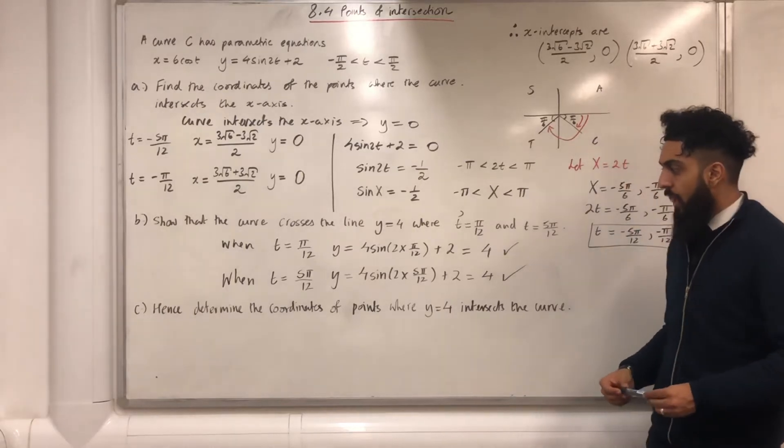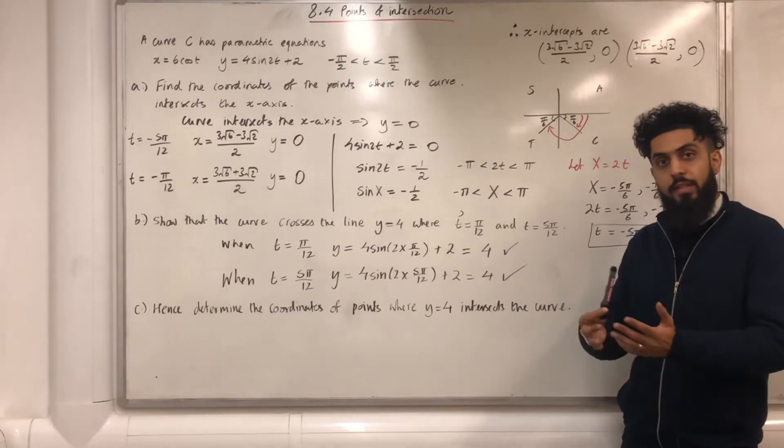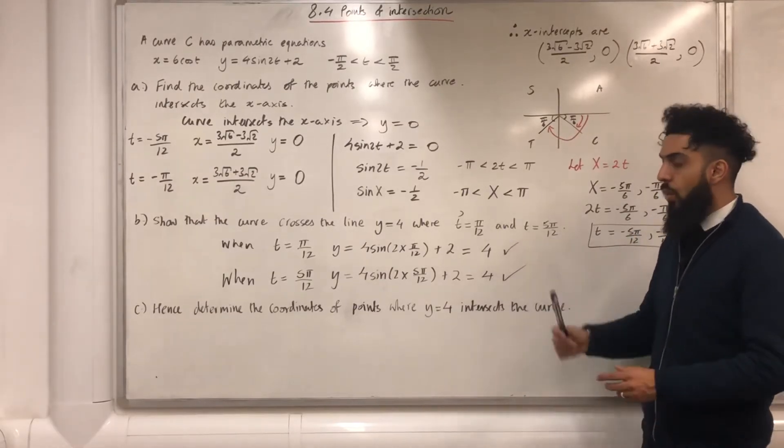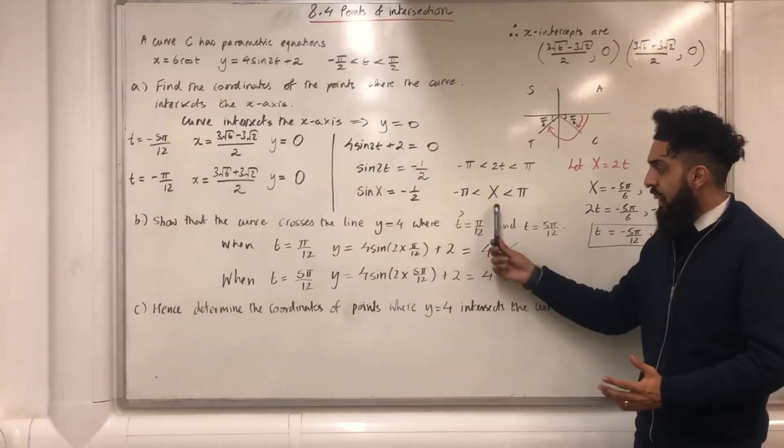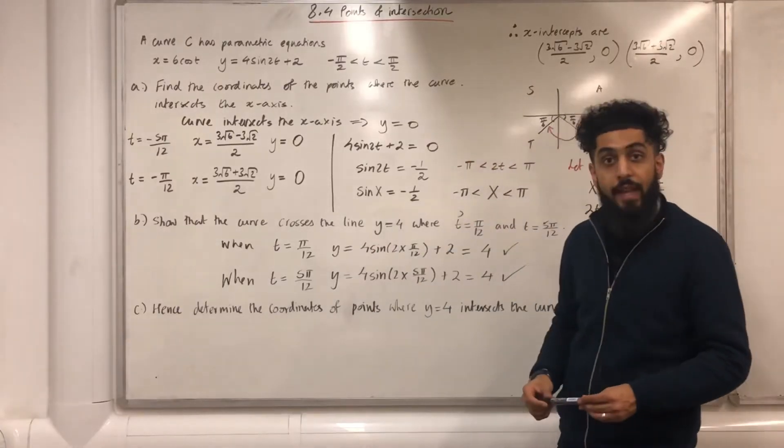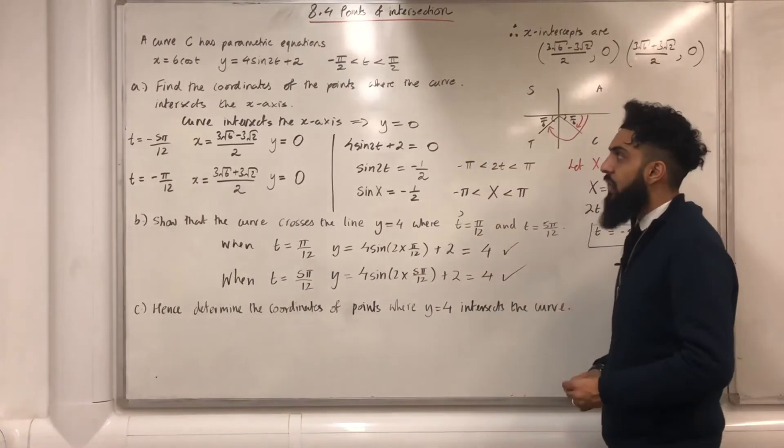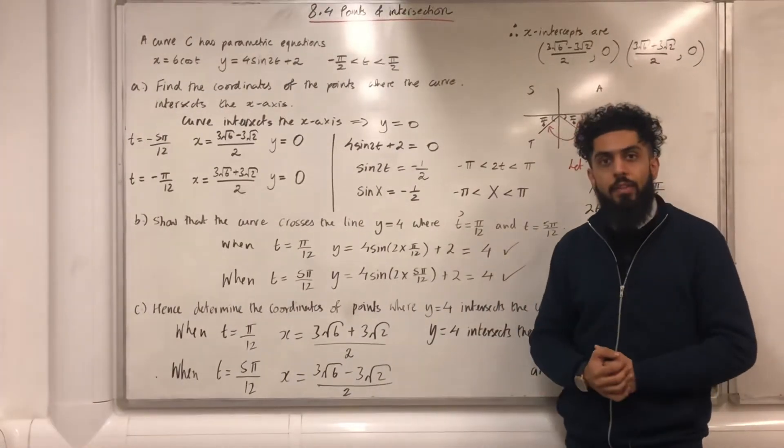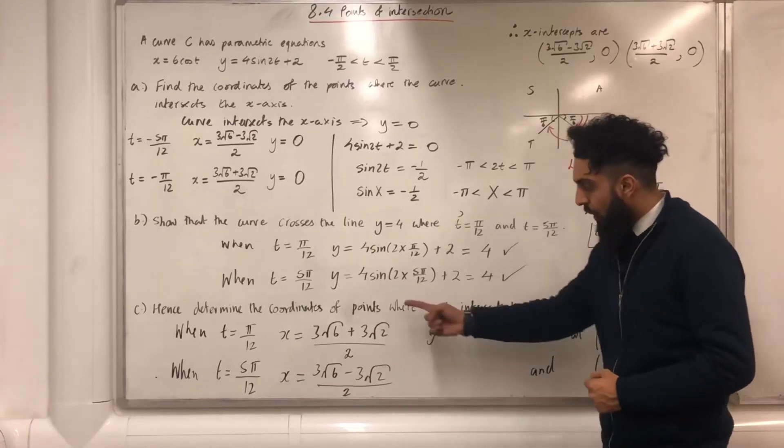Moving on to part c, hence, determine the coordinates of points where y equal 4 intersects the curve. When y equal 4 intersects the curve, there are two possible t-values. The first one is t equal pi over 12, the second one is t equal 5 pi over 12. Substitute t equal pi over 12 into the x-equation to generate the first x-value, and then substitute t equal 5 pi over 12 into the x-equation to generate the second x-value. Putting these t-values into the x-equation gives me these two x-values over here.